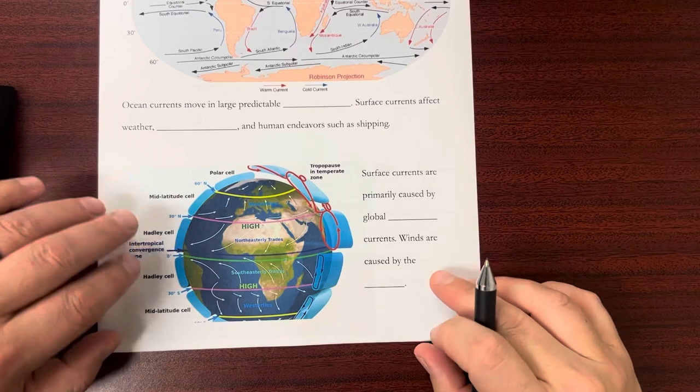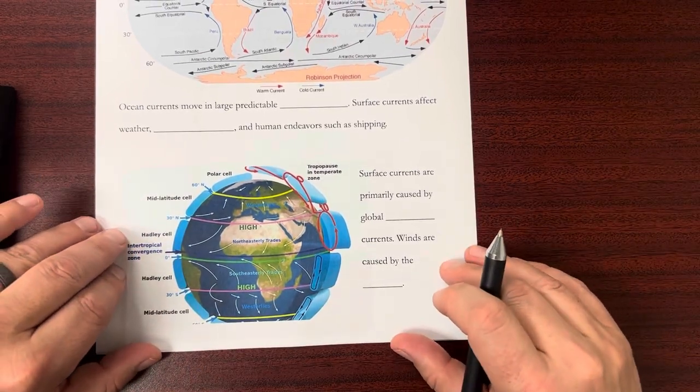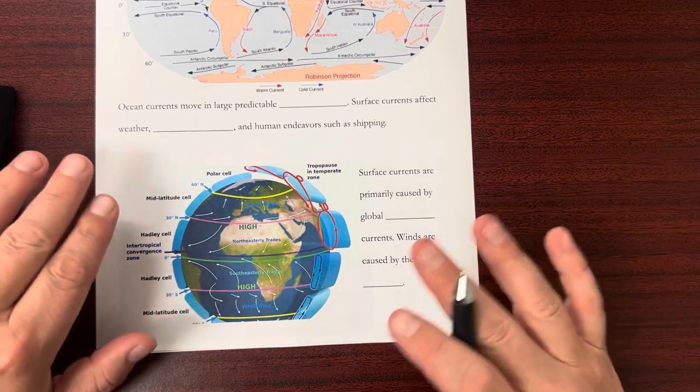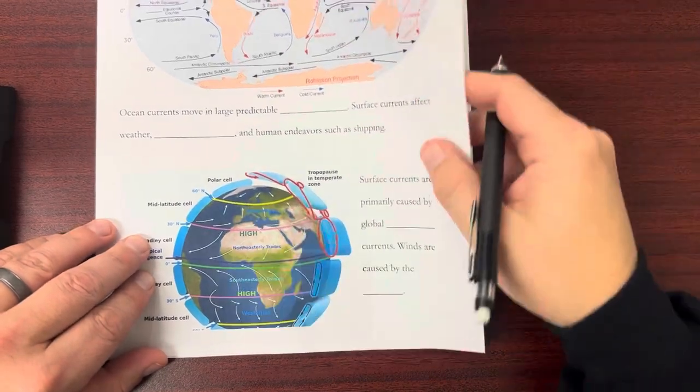Winds are caused by the sun because the sun heats up the earth to different amounts and causes this movement of air from one area to another. All right let's continue.